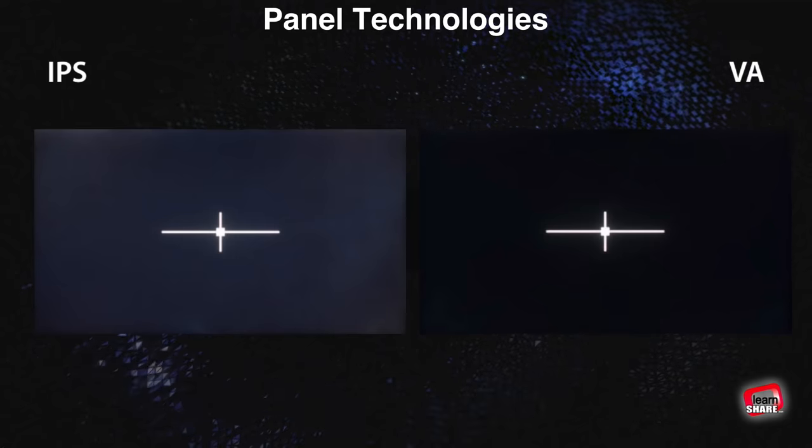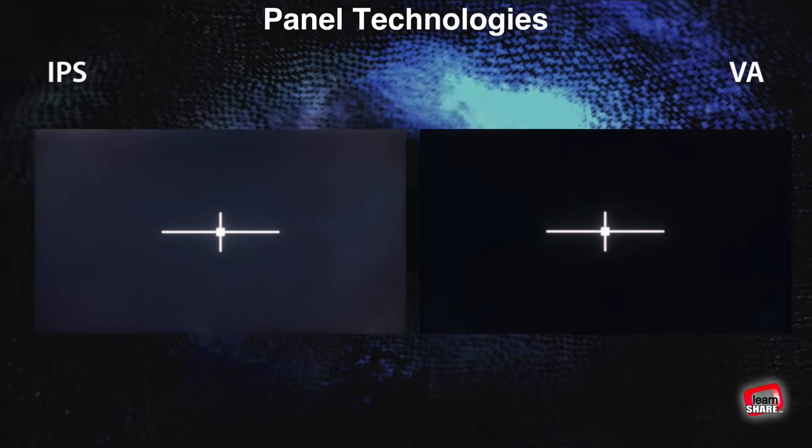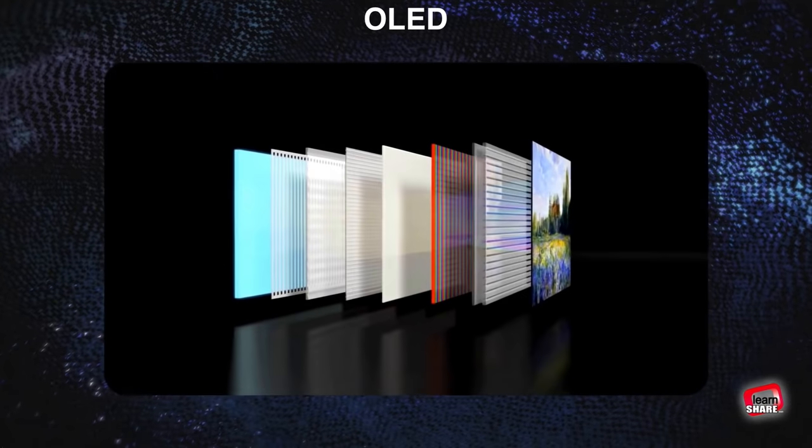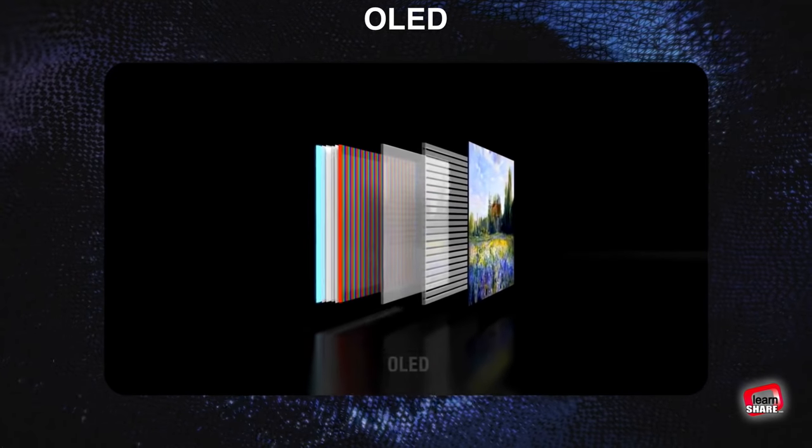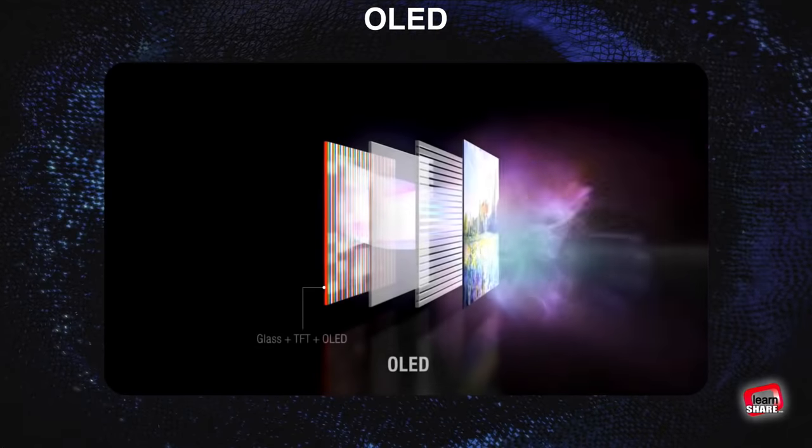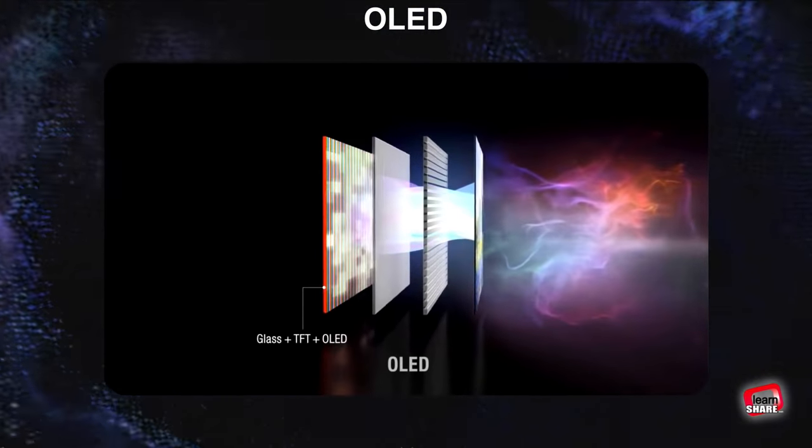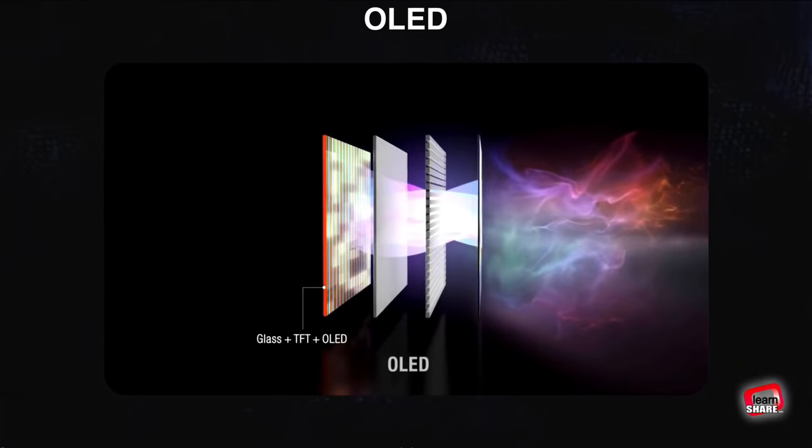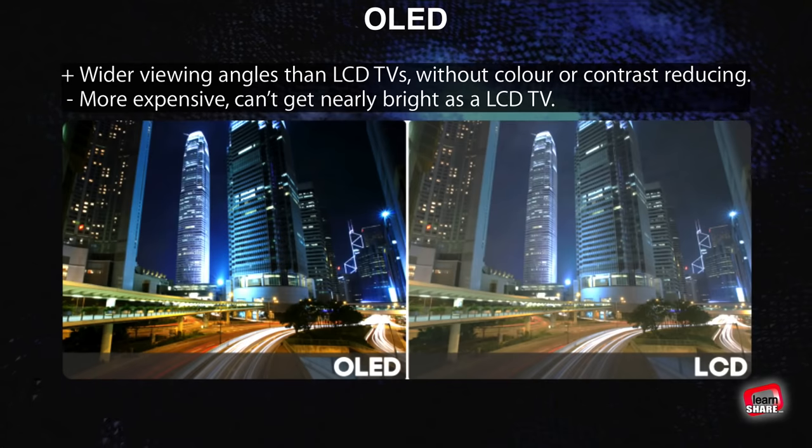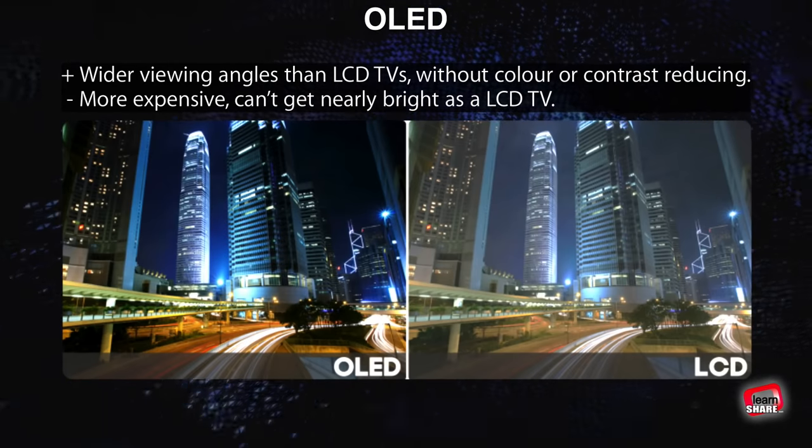OLED TVs use a system of organic phosphors that enable each pixel to generate its own light. This allows superior contrast and light precision than you can get with even the most advanced LCD TVs. OLED TVs can be watched from much wider viewing angles than LCD TVs without color or contrast reducing.